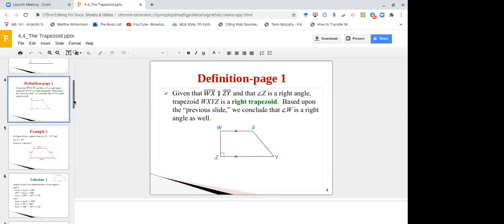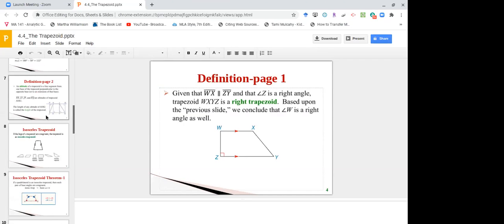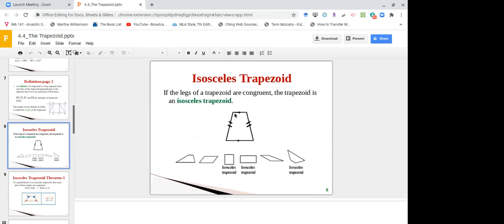Now we have a couple of examples for you on the coming slides before we get to the next definition, which is the altitude of the trapezoid. Now this can get a little bit confusing, it's not meant to be, but it can be. The altitude of a trapezoid is a line segment from one base of the trapezoid perpendicular to the opposite base. So altitudes are always perpendicular from the base. You start at a base and you drop a straight line perpendicular to the other base.